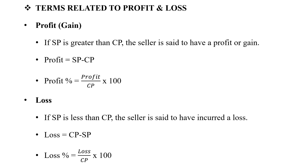If we buy at the sale price, the price above the cost price is the profit. Profit is equal to SP minus CP. Profit percentage is equal to profit divided by CP into 100.